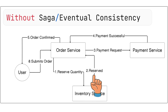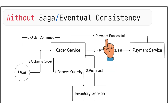If the stock reservation was successful, then the order service makes a synchronous call to the payment service to charge the user. If the payment service is also successful, then the order service marks the order as completed or confirmed and returns a success message to the user.